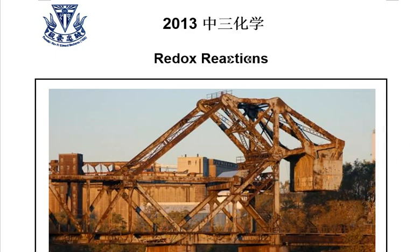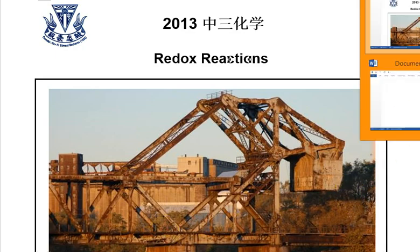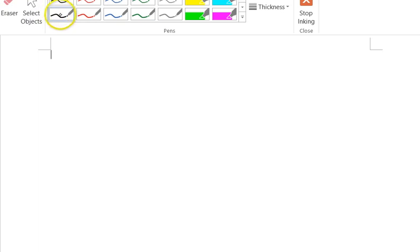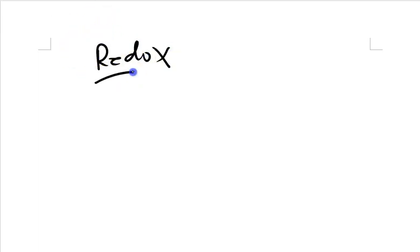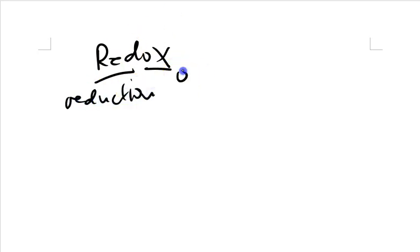So what other types of reactions are redox reactions, and what is a redox reaction? Let's take a look. Before we go into the notes, let me give you a very quick summary of redox reactions. The term redox is actually made up of RED and OX — reduction and oxidation.